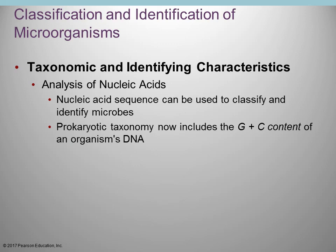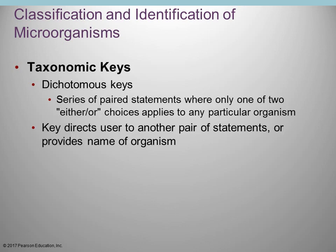You can also analyze the nucleic acid — collect the DNA, sequence it, and record the GC content for taxonomic purposes. The GC content tells you what percentage of the DNA bases are G and C. For example, 65% of the bases are G and C would be a high GC content.